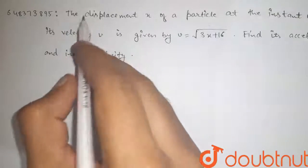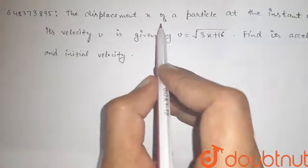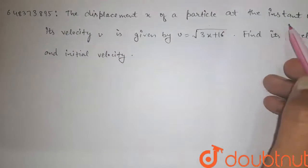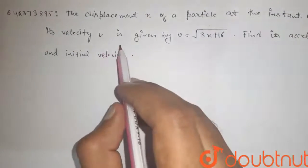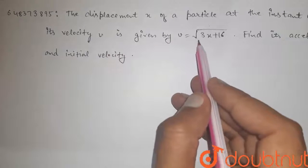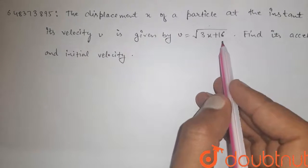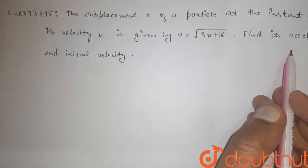Hi guys, here is the question. The displacement x of a particle at the instant when its velocity v is given by v equals square root of 3x plus 16. Find the acceleration and initial velocity.